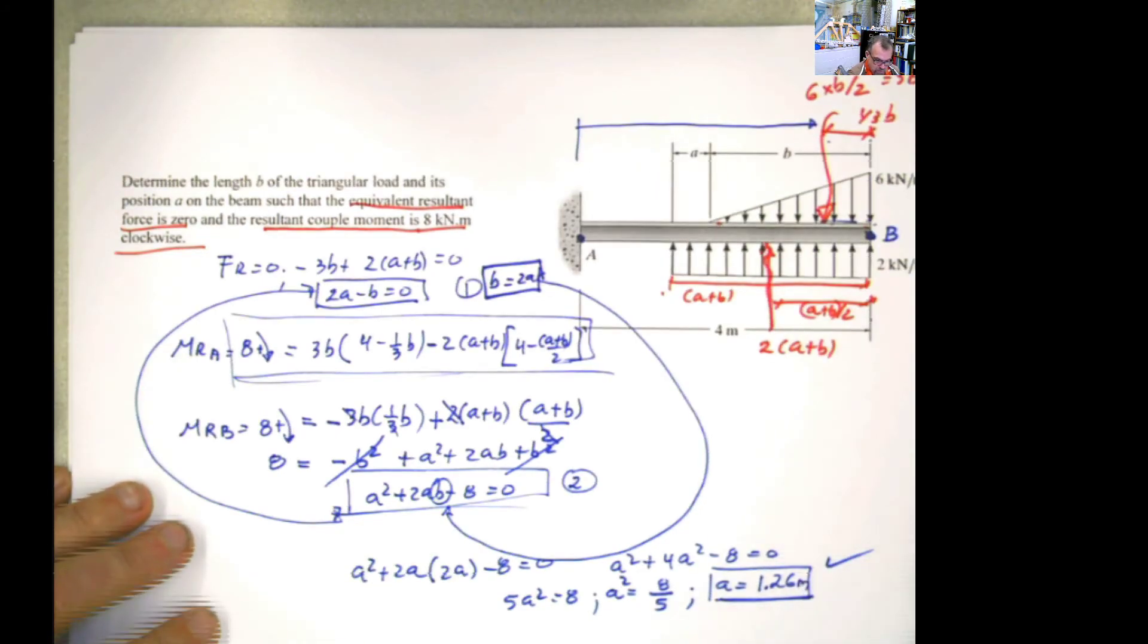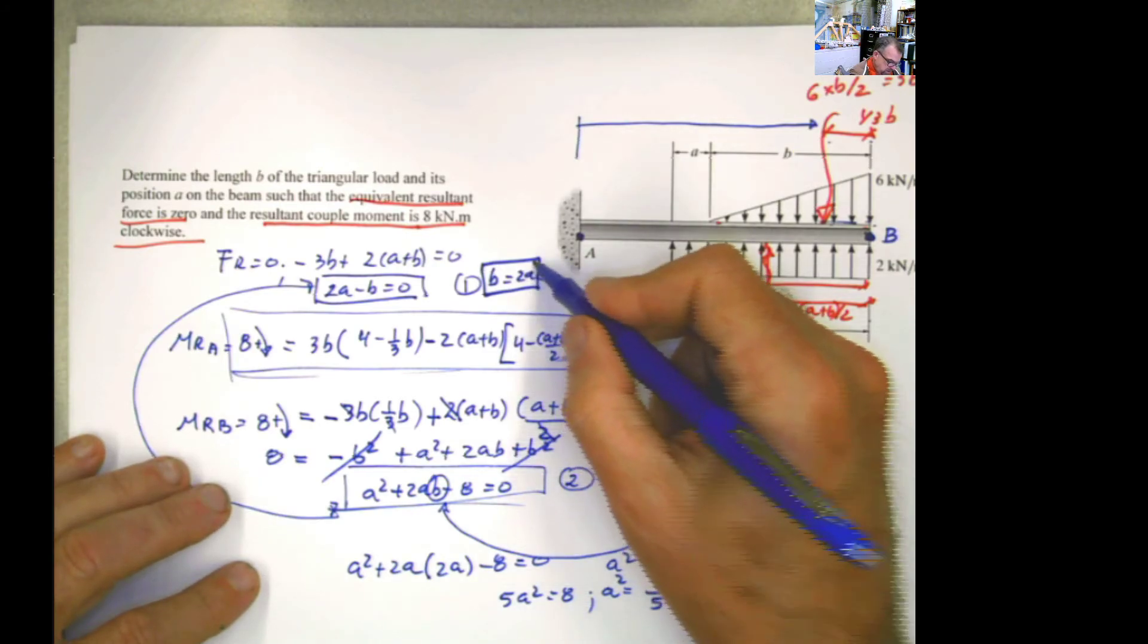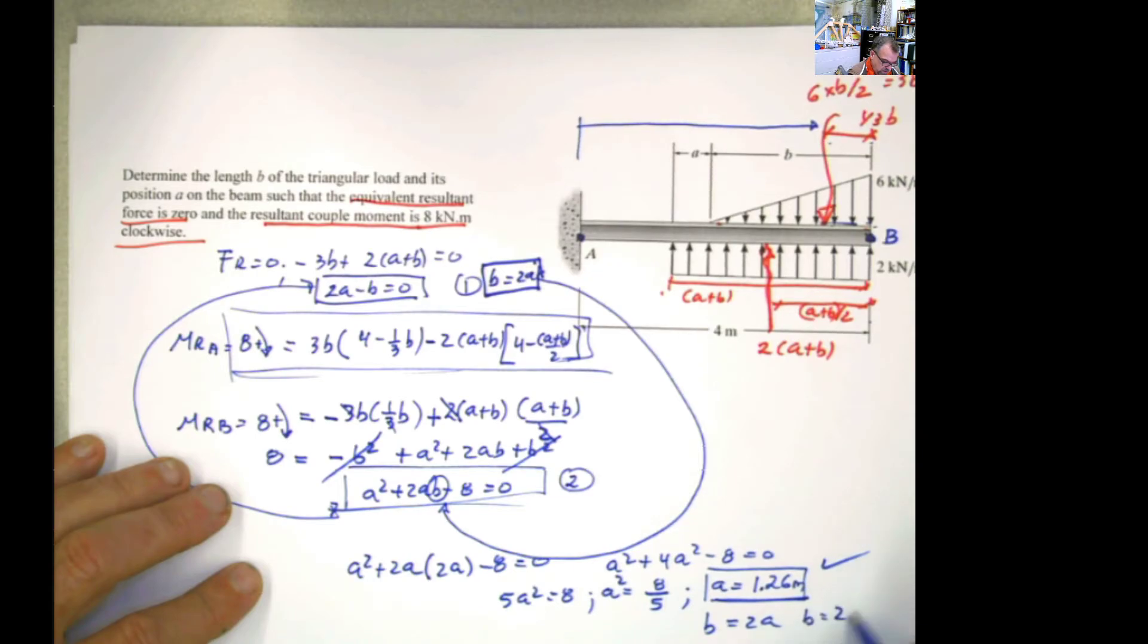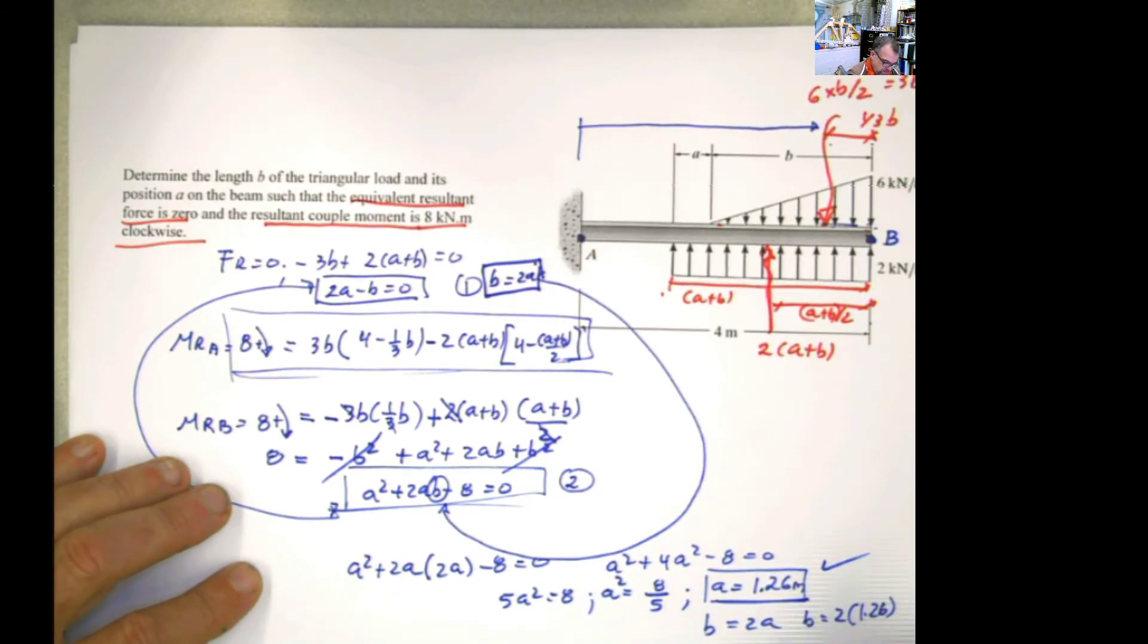And now if we want to solve for b, it's easier that I use that equation. And I say b equals 2a, substituting this in or plugging this into equation 1. So that means that b is going to be 2 times 1.26. And b equals 2.52.